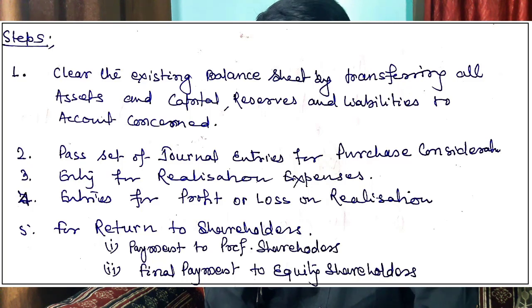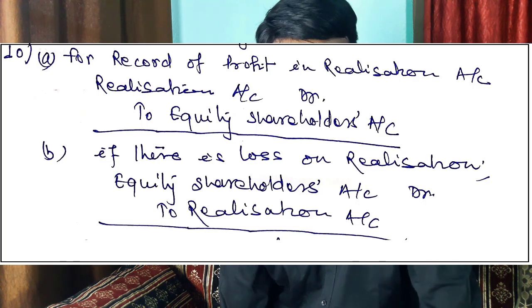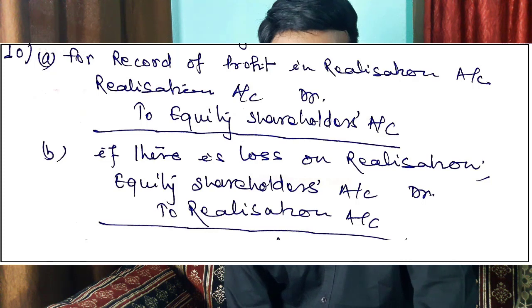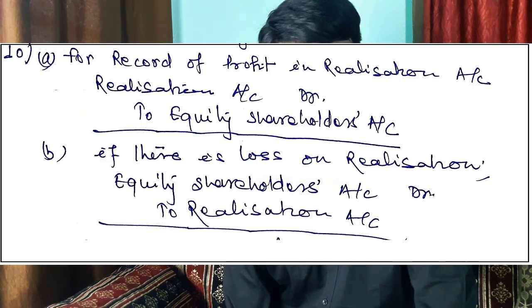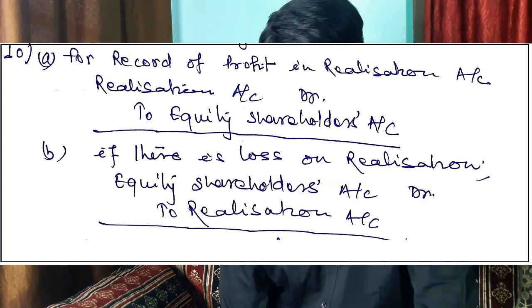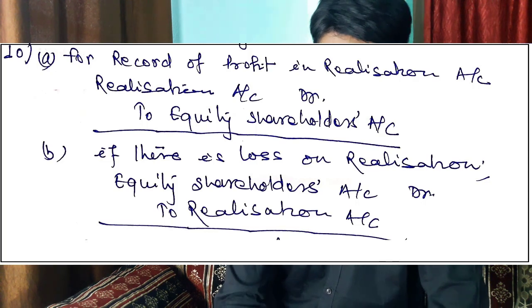Step four: for recording profit or loss in Realization Account. If there is a profit in Realization Account: Realization Account debit, to Equity Shareholders Account. If there is a loss: Equity Shareholders Account debit, to Realization Account. Profit or loss, whatever it is, should be transferred to Equity Shareholders Account. Step four is clear.